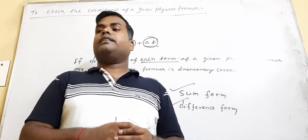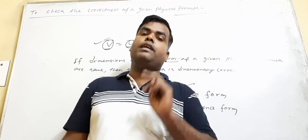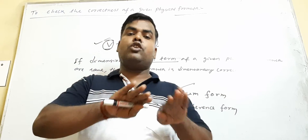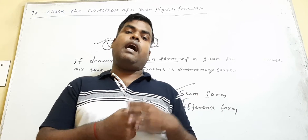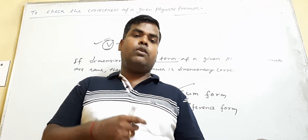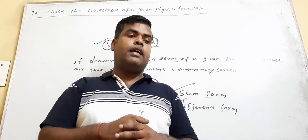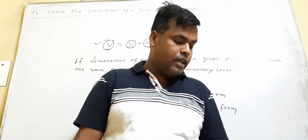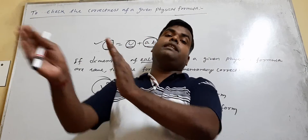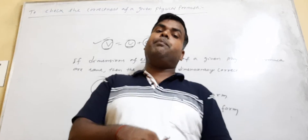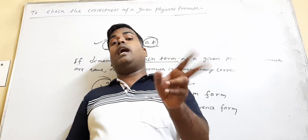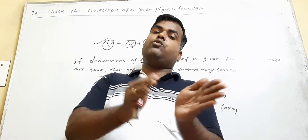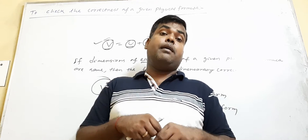Why? Because two same quantities you can add, and two same quantities you can subtract. You cannot add one quantity with a different quantity. You can subtract distance from distance, but you cannot add force with distance. You can multiply two different quantities, but you cannot add or subtract two different quantities. For example, you can multiply mass with acceleration, but you cannot add mass with acceleration.